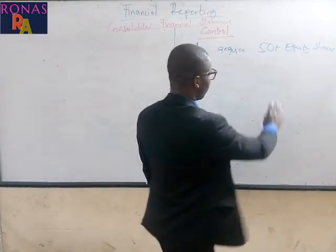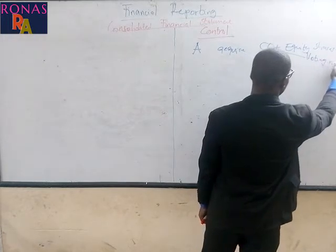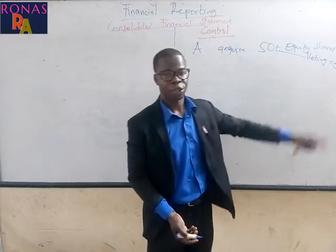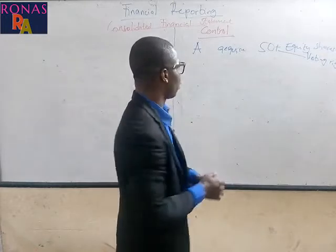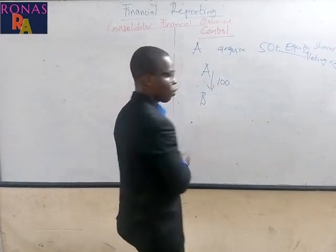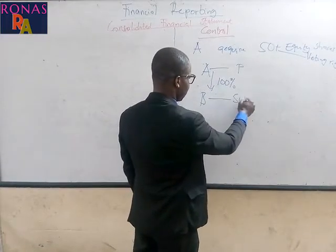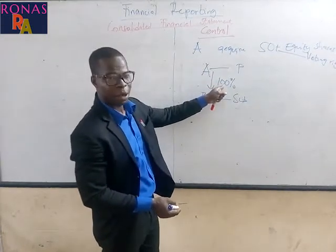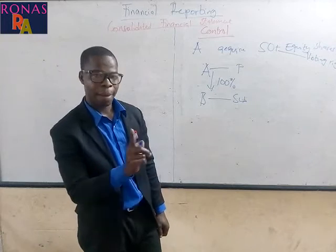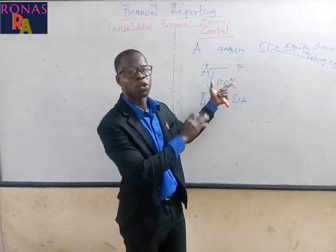This equity share is also known as the voting right. So when an entity is acquiring 50 percent or more of the equity shares or voting rights of another entity, then we say there is control. For example, if A acquires 100 percent of the equity shares of B, then A becomes the parent and B becomes the subsidiary, because A is acquiring all the equity shares of B.